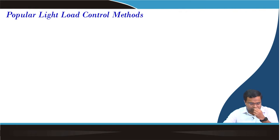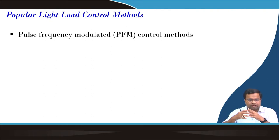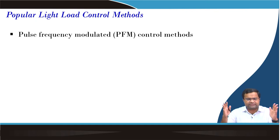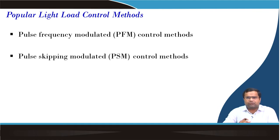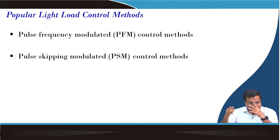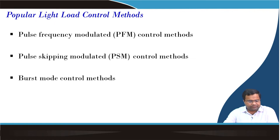The first popular light load control method is pulse frequency control, where constant on time is a good example, followed by adaptive on time control and hysteresis pulse control — all falling under pulse frequency modulation. Another popular technique is pulse skipping modulation, where the number of skip cycles changes as load current changes. As load current decreases, skip cycles increase, so the effective time period increases and switching frequency decreases.